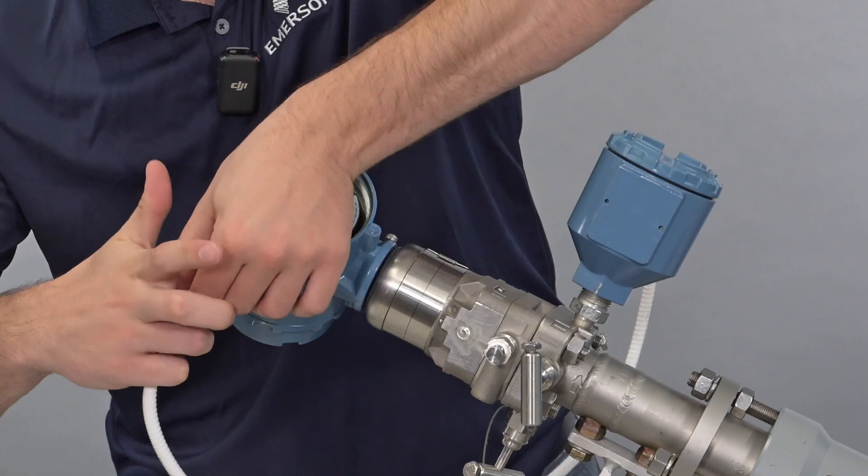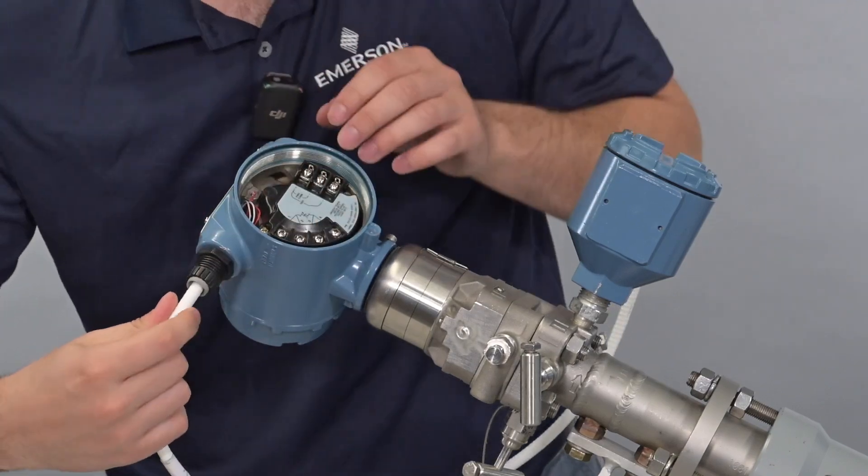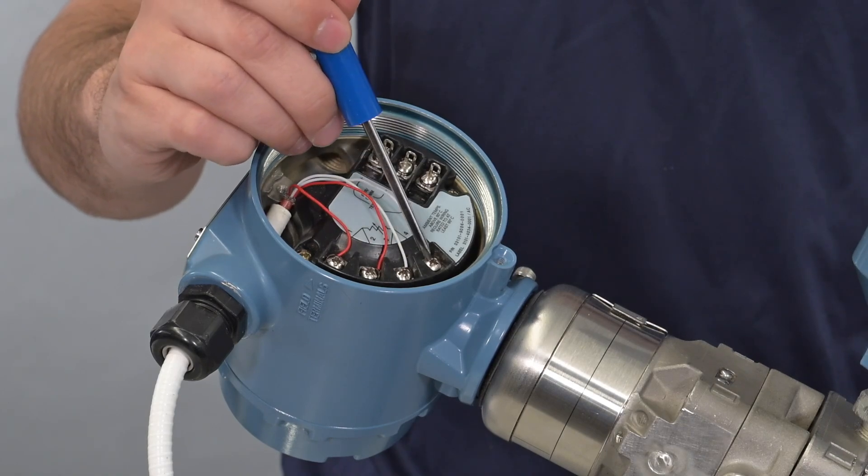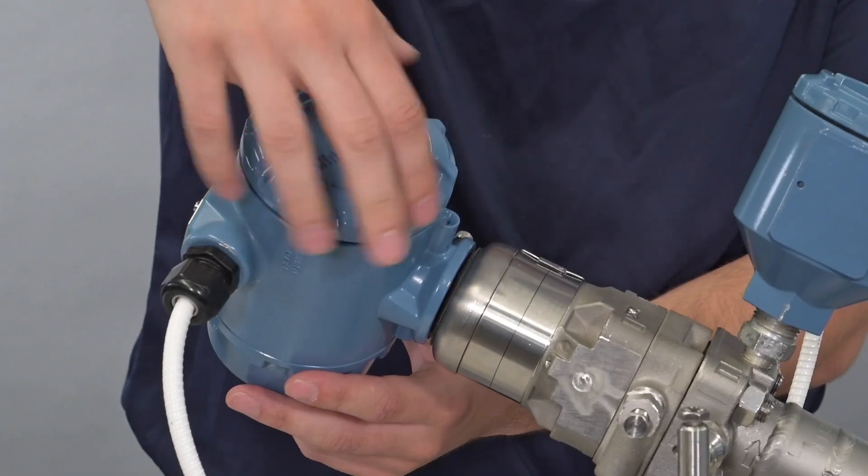Insert the RTD wires through the 3051 SMB conduit entry and then reattach wires to the terminal block using a small screwdriver. Then screw the cover onto the back of the transmitter.